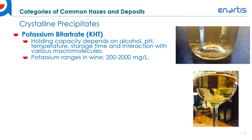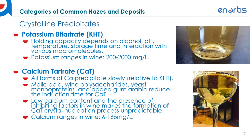Here we have a list of the potassium ranges in wine, which is anywhere from 200 to 2,000 milligrams per liter. Calcium tartrate precipitates much more slowly compared to KHT and is not as dependent on temperature. Inhibitors to calcium tartrate precipitation include malic acid, wine polysaccharides, yeast manoproteins, and gum arabic, which can reduce the induction time.